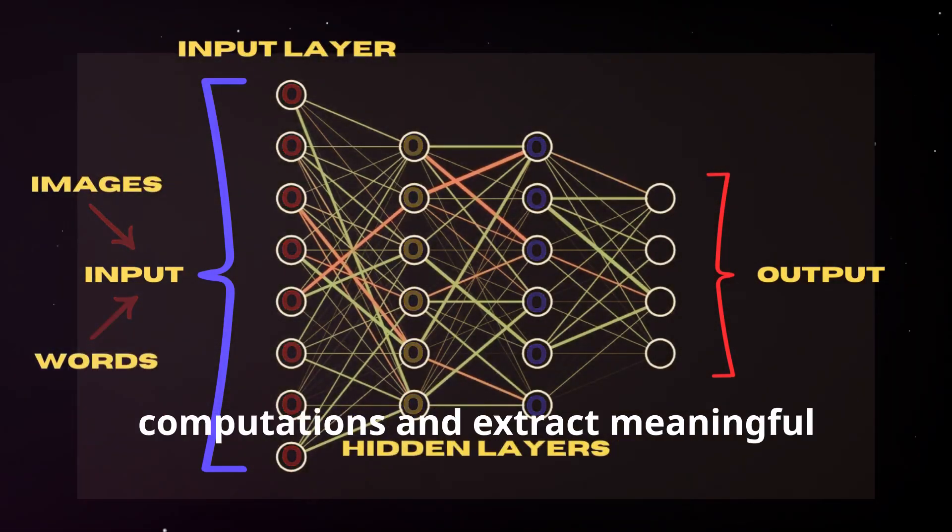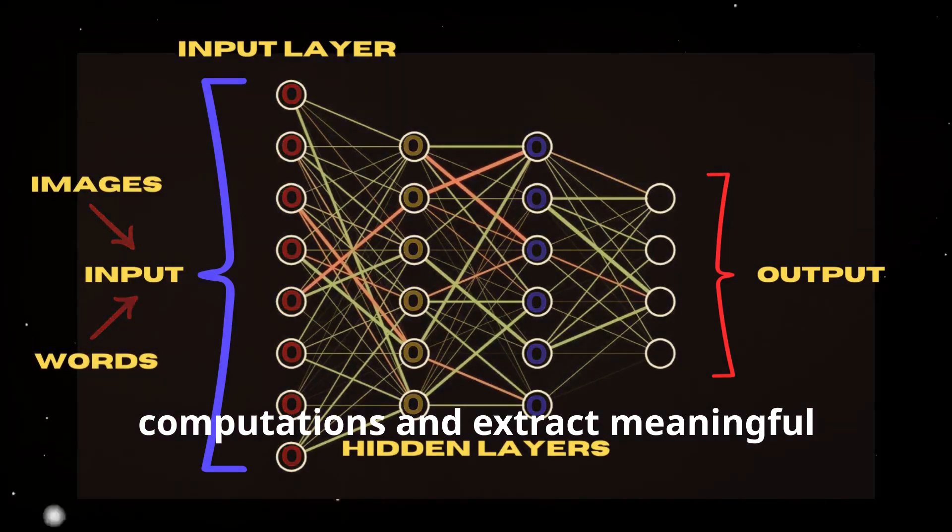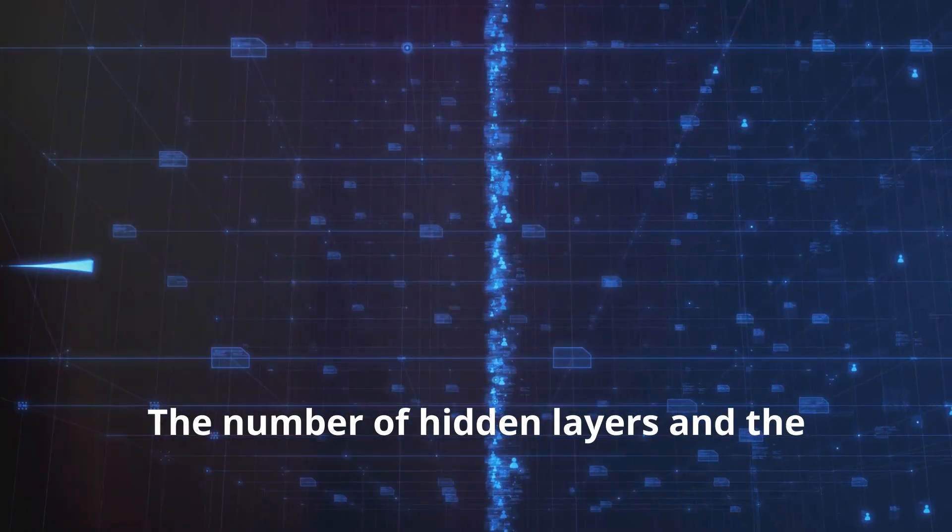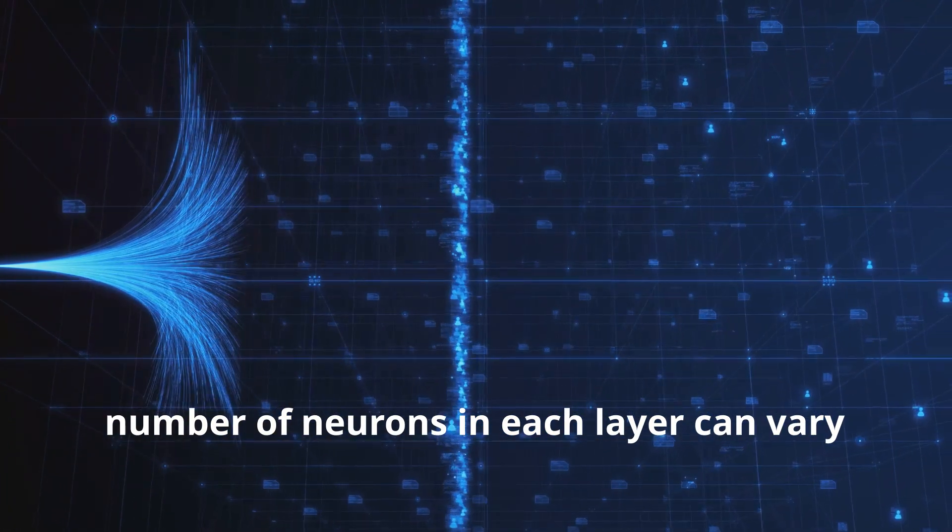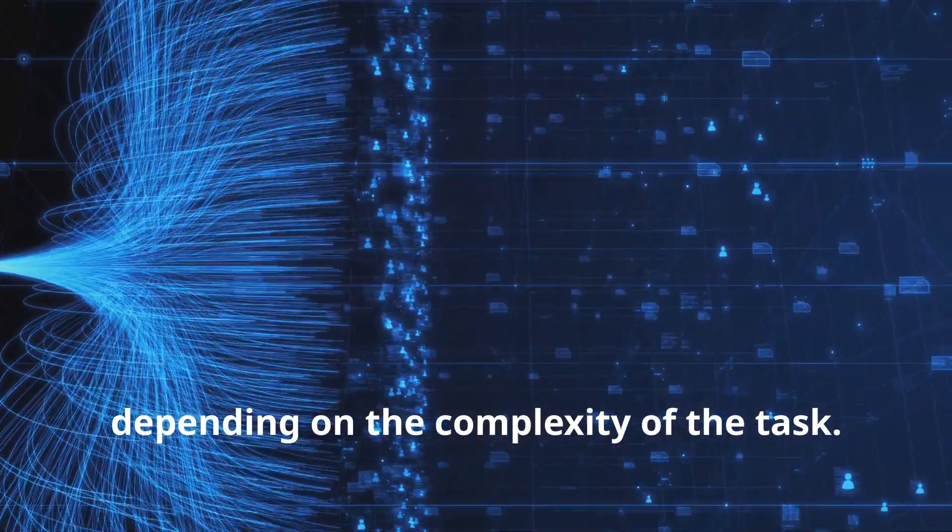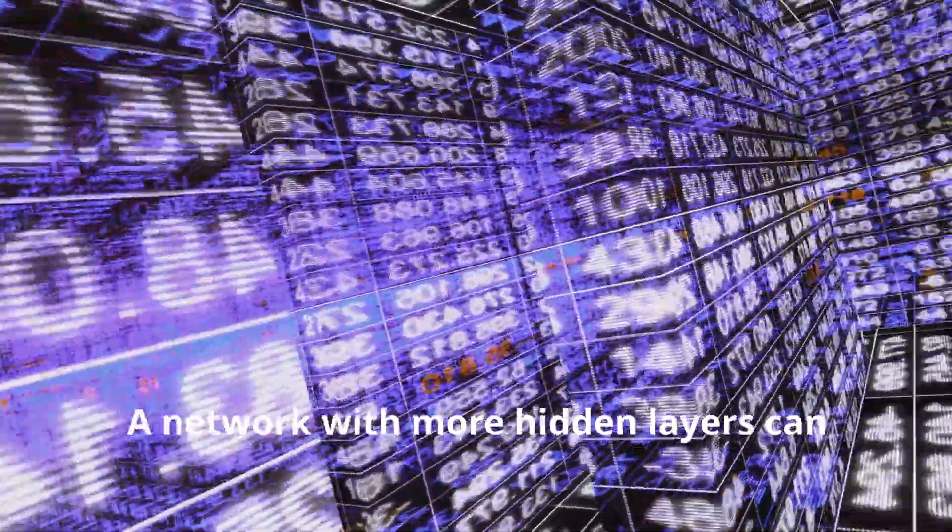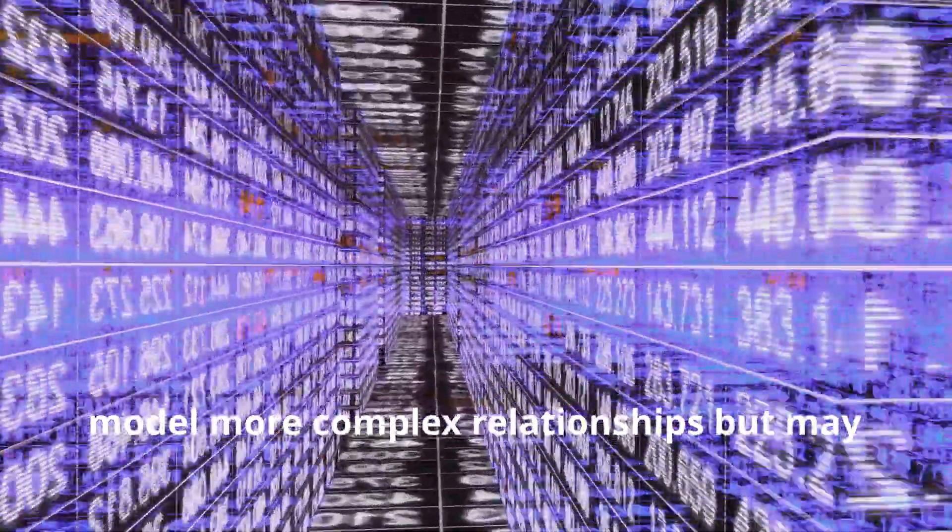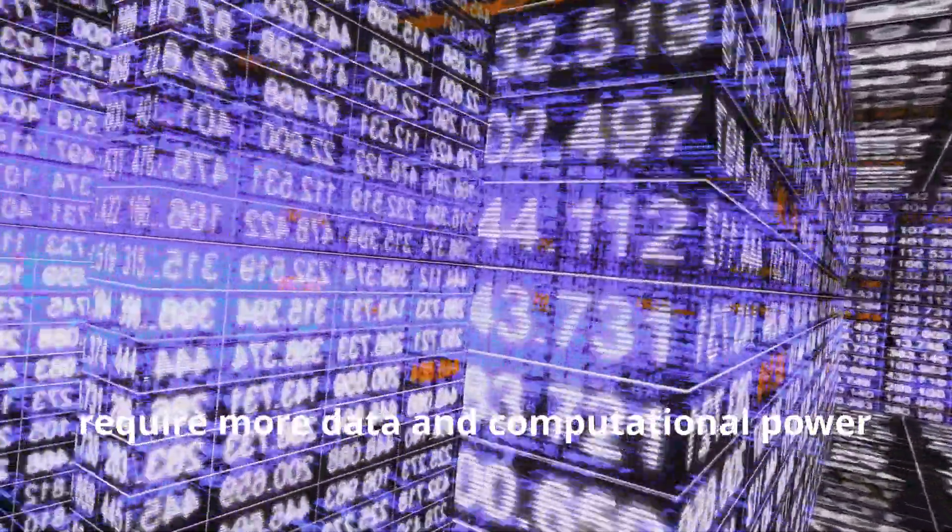Hidden layers perform complex computations and extract meaningful features from the data. The number of hidden layers and the number of neurons in each layer can vary depending on the complexity of the task. A network with more hidden layers can model more complex relationships but may require more data and computational power to train.